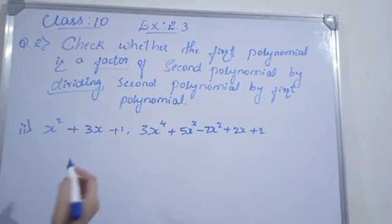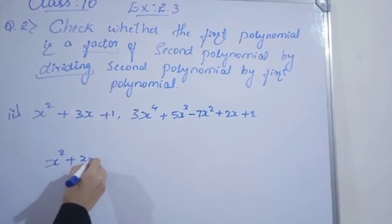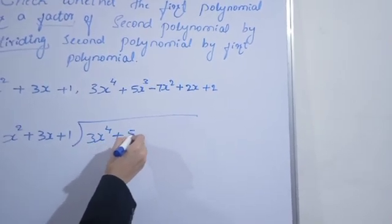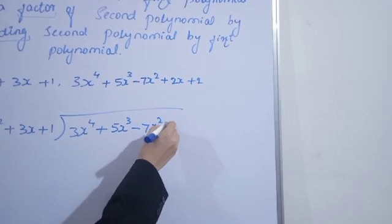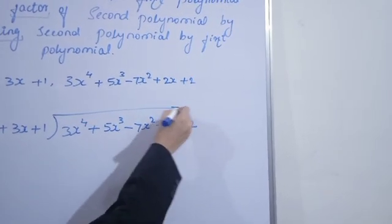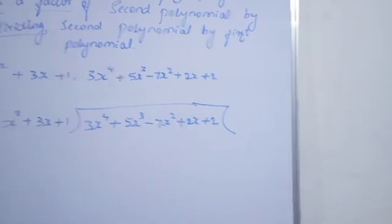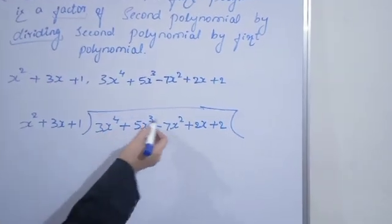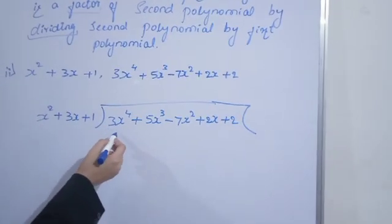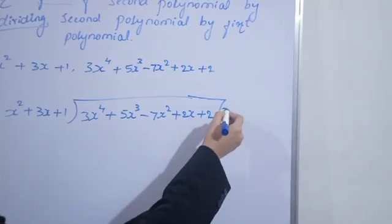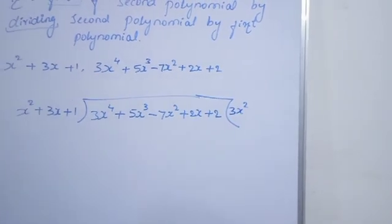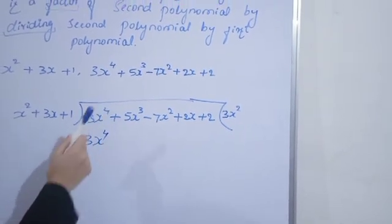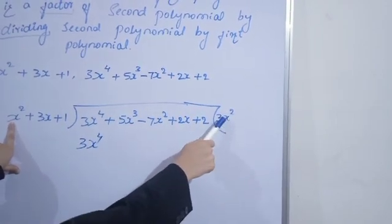Let's move on to the next problem. Same — check whether the first polynomial is a factor of the second polynomial or not. Same jaisa humne first problem kiya tha — divide karke agar remainder 0 aata hai to factor, agar nahi aata 0 to it is not a factor. Sabse pehle polynomial ko check karna hai ki descending order mein hai ya nahi, phir divide karna start karenge. Here we want 3x⁴, we have x², so 3x².